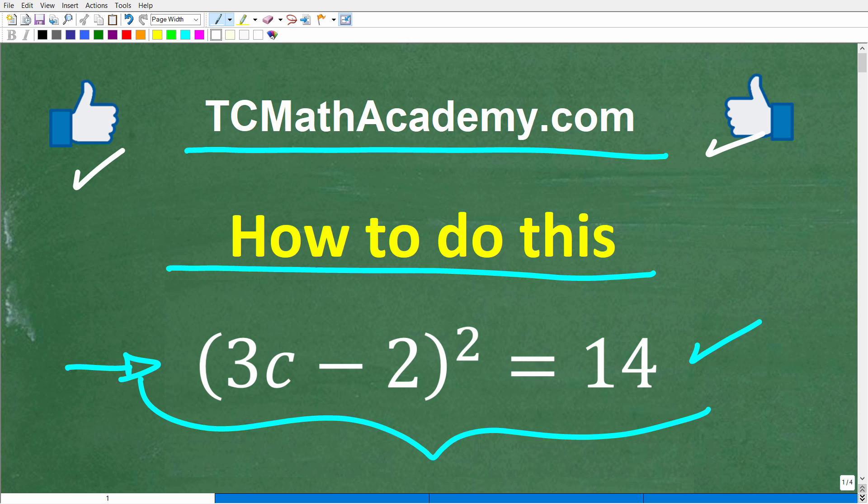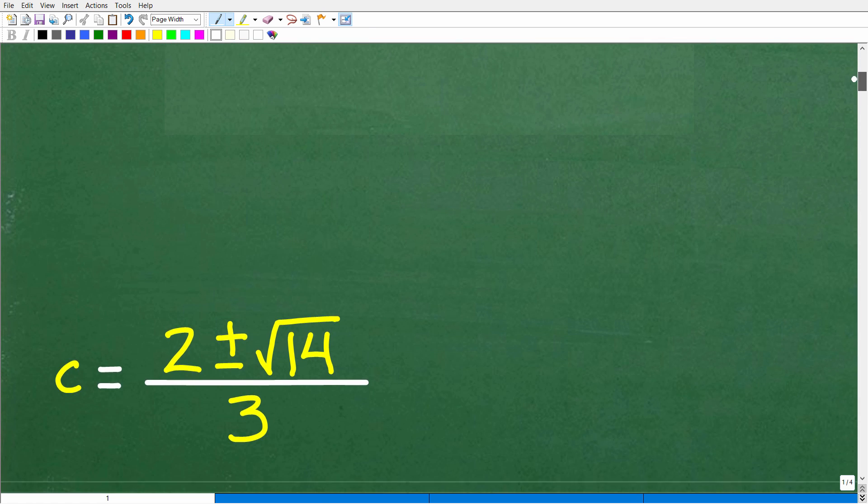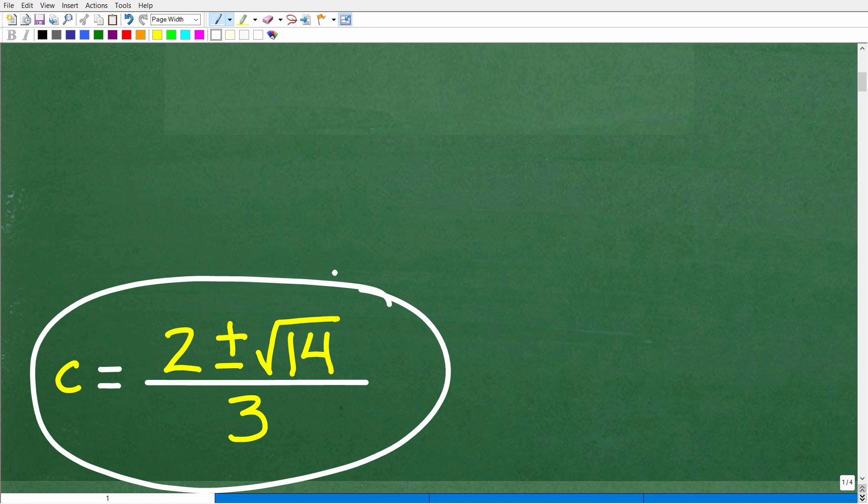So 3C minus 2 squared is equal to 14. We are dealing with a quadratic equation. The correct answer is C equals 2 plus or minus the square root of 14 over 3. We need to understand what this plus or minus business means.